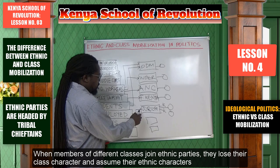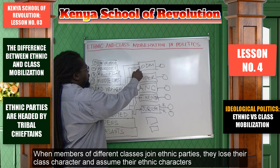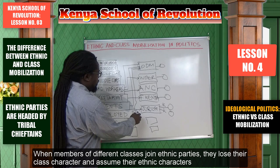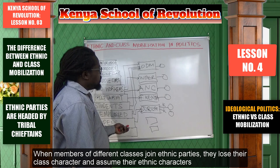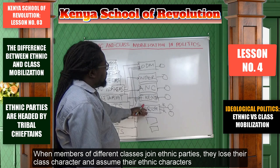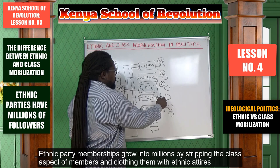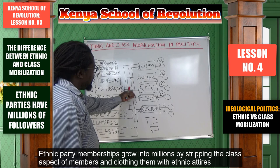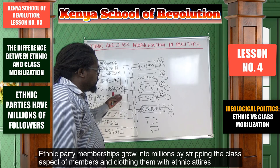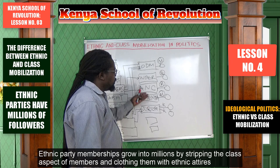The same case with the unemployed: the unemployed Kikuyu will join Jubilee; the unemployed Luo will come all the way and join ODM; the unemployed lumpen will join Jubilee if Kikuyu or Kalenjin, or a Kalenjin party. So at the end of the day, these ethnic parties probably have millions of followers from their own ethnic groups. But when they come here, they lose their class identity and assume ethnic identity. That is why we have parties based on ethnicity.